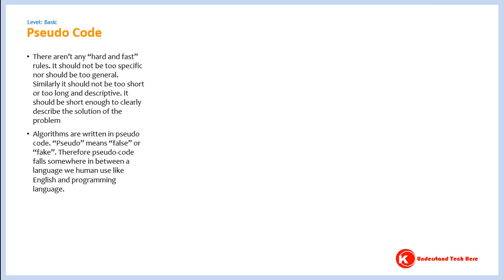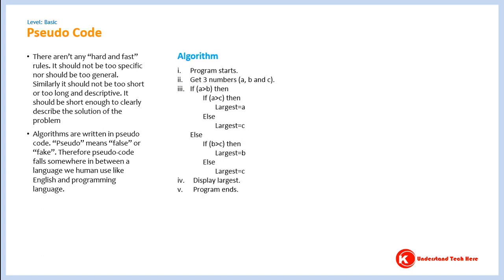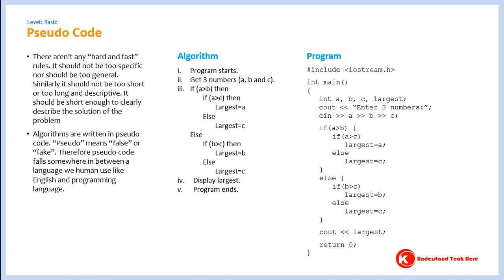This is an algorithm to find the largest among three numbers and this is a program written in C++ language. Now compare these two and see how algorithms and programs are similar and of course different to each other.